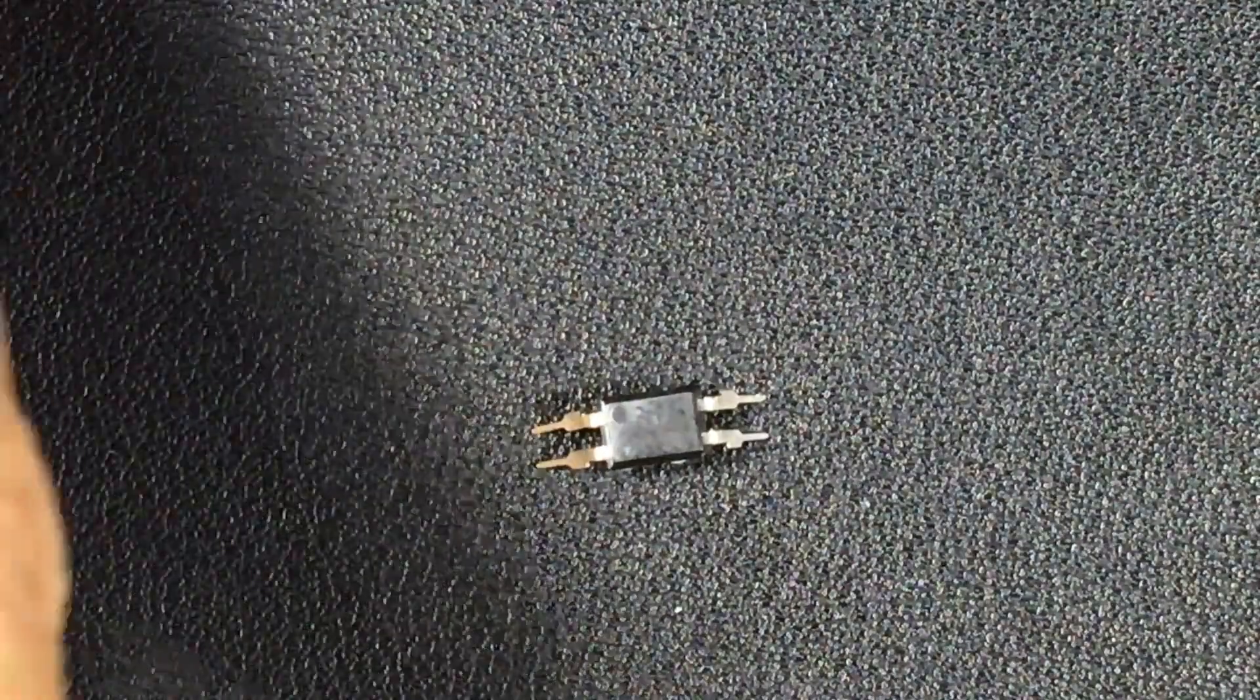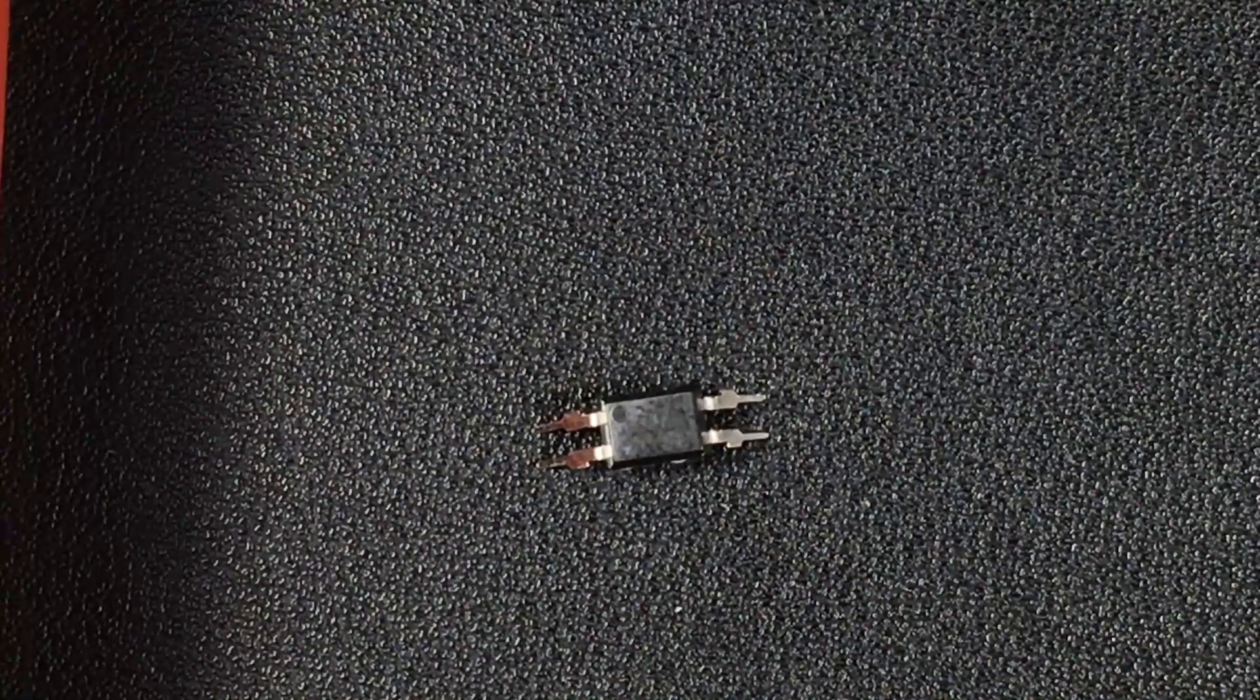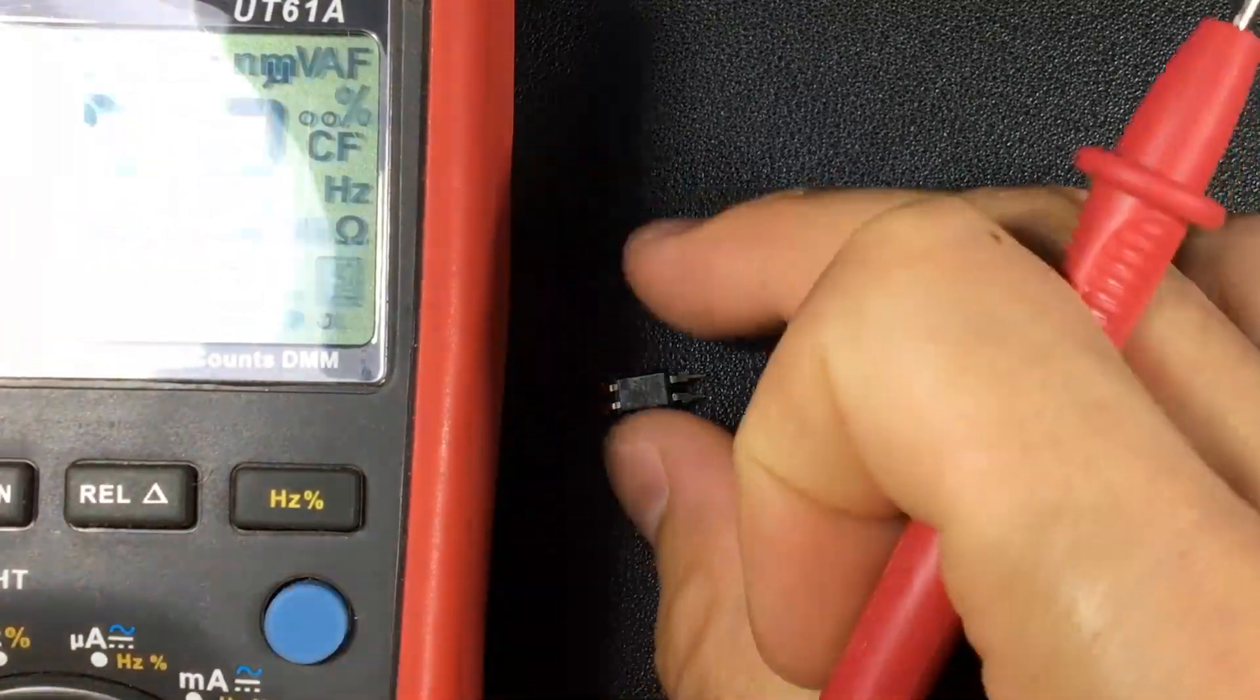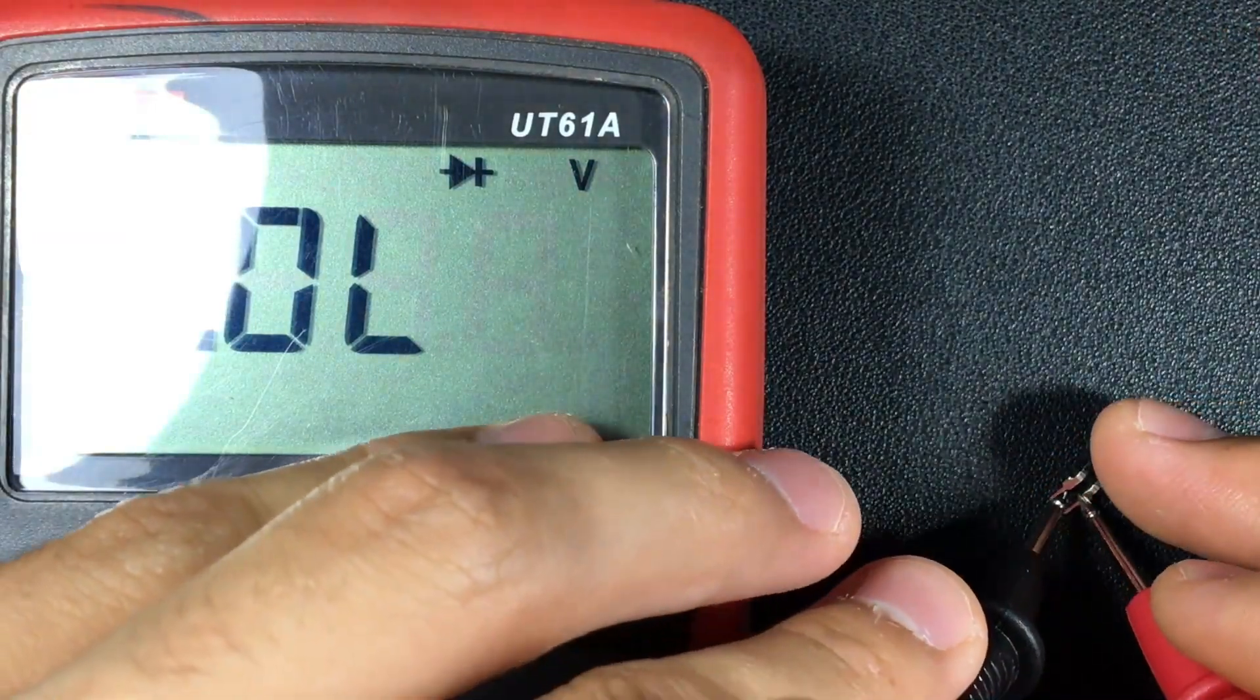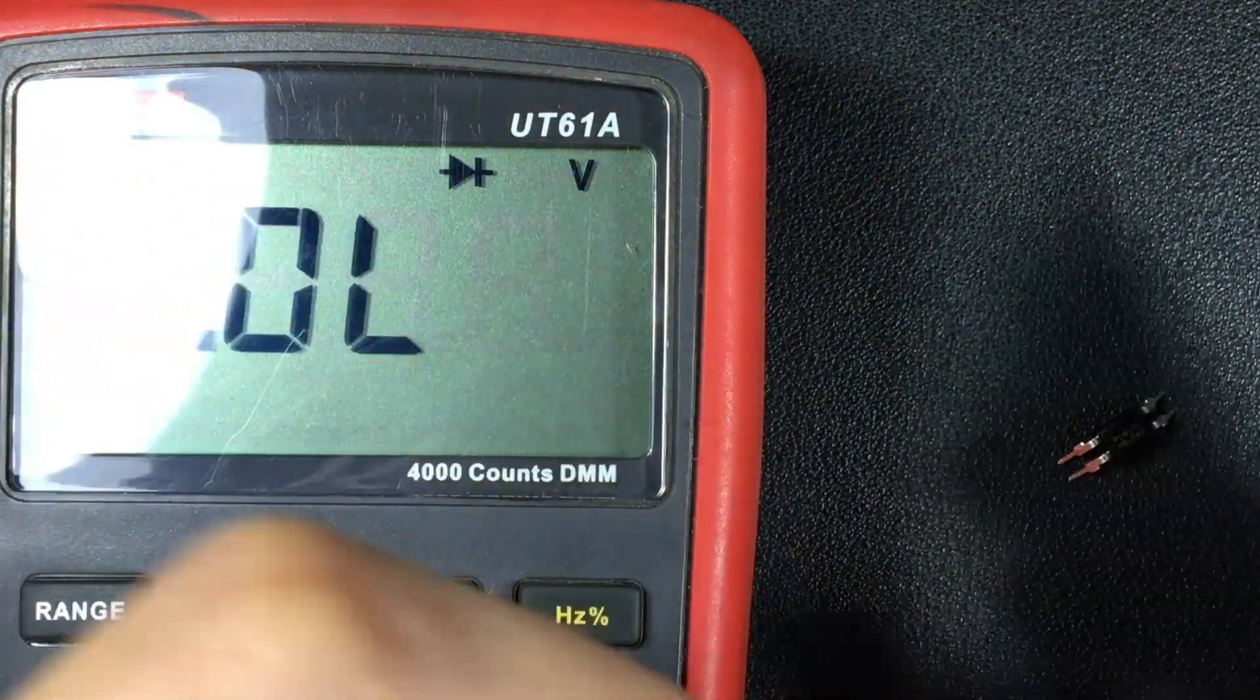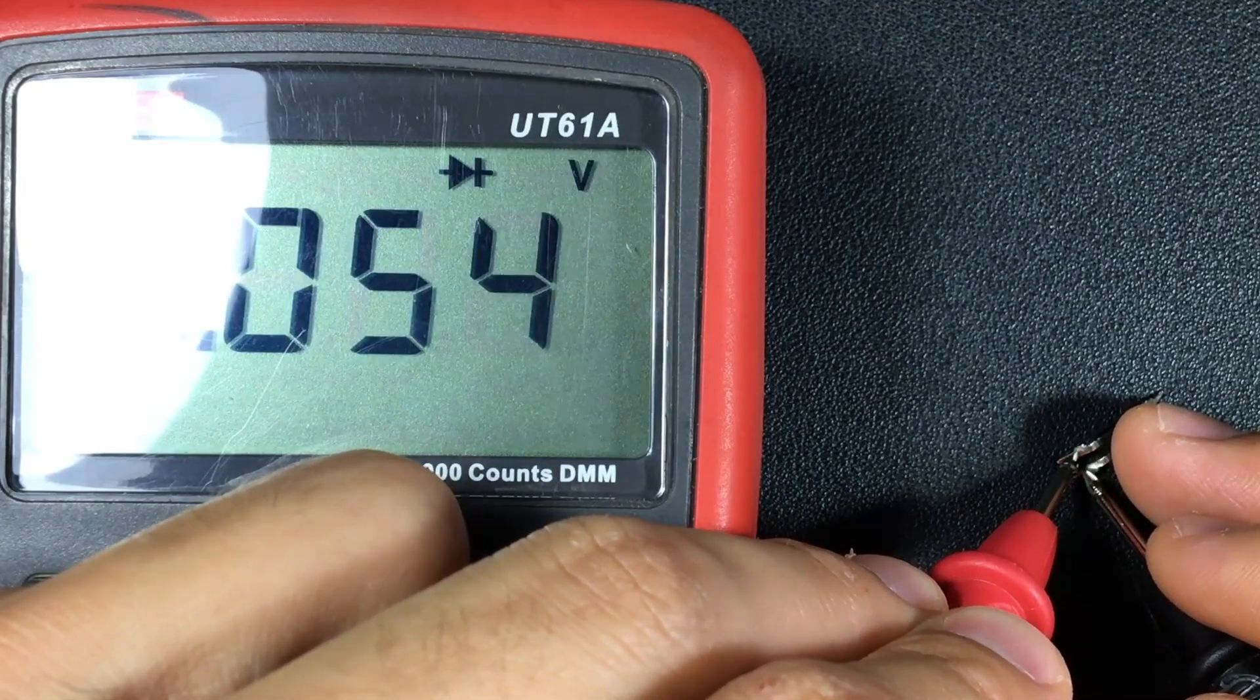Let's test with the multimeter, to see if it is in good condition or not. We will place the multimeter in LED position and measure. Open line, perfect. And if we invert, we will have the voltage drop of the LED.